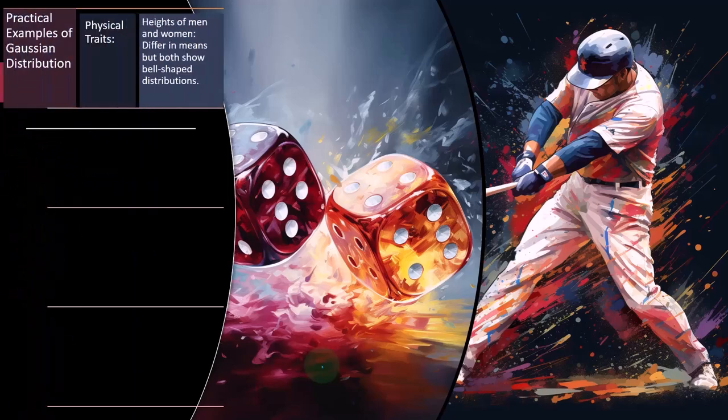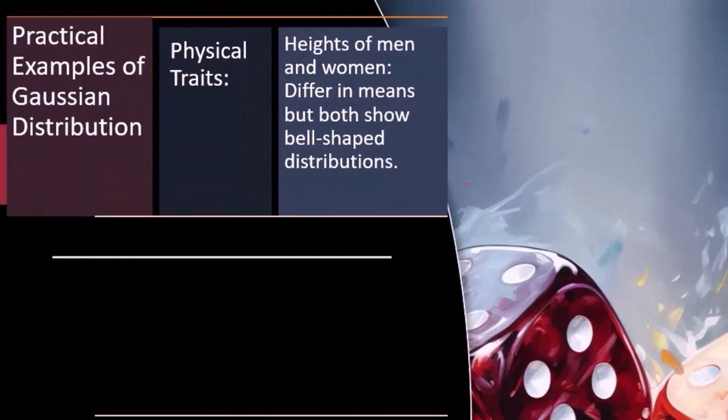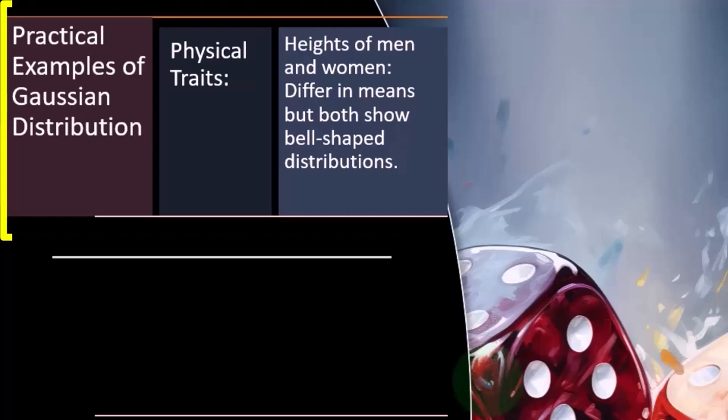So physical traits. Whenever we're thinking about things in nature, oftentimes we're trying to say, well, how tall is something? How long is something? Often we think about human beings, but anything else, you know, animals, plants, and whatnot, you might see similar types of things where you'd say the heights of men and women, for example, differ in means, but both show bell-shaped distributions.